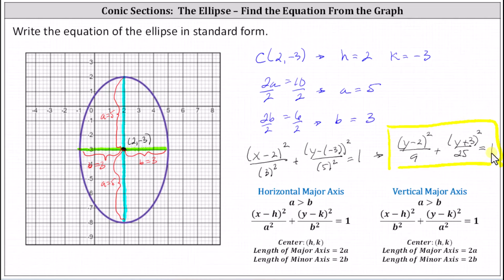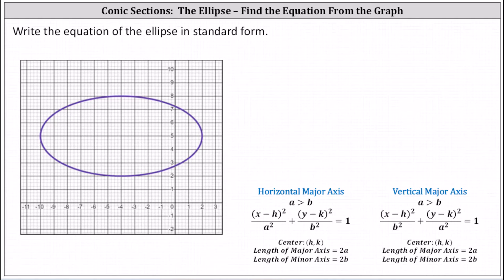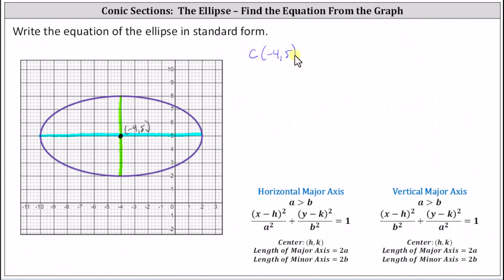Let's take a look at a second example. Analyzing the ellipse on the coordinate plane, notice the major axis is horizontal and the minor axis is vertical. The center is the point negative four comma five. Because we have a horizontal major axis, the equation in standard form is the square of x minus h divided by a squared, plus the square of y minus k divided by b squared, equals one, where a is greater than b. The center is h comma k; the major axis has a length of two a, and the minor axis has a length of two b. Because the center is negative four comma five, we know that h equals negative four and k equals five.